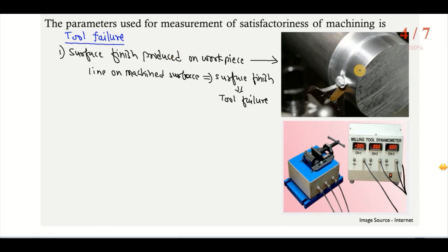So whenever we start machining we get mirror-like or excellent finish on the workpiece, but after successive use of the same cutting tool we get lines on the machined surface where the surface finish is disturbed and we can say the tool has failed. We can then re-sharpen the failed tool by using the grinding process and continue the machining operation.